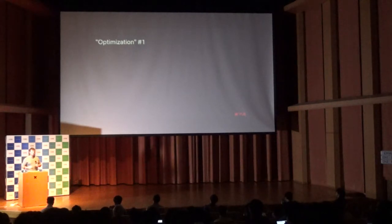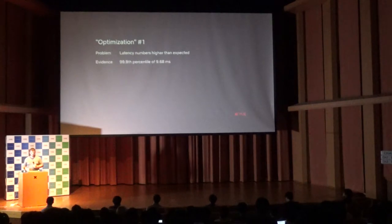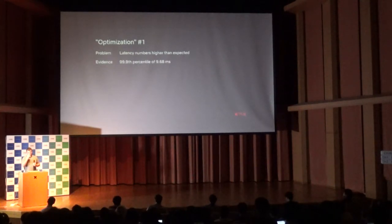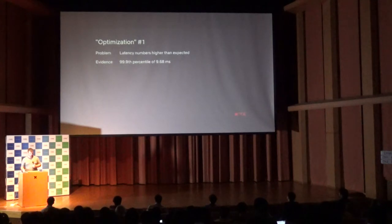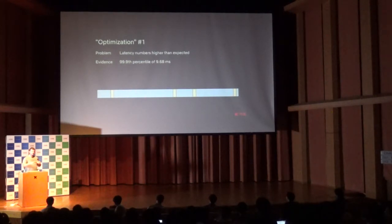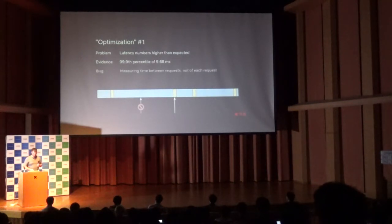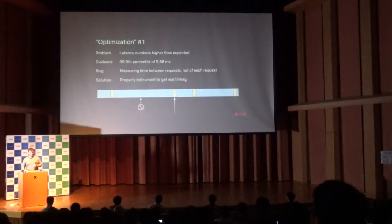Since this is our code, I can talk about optimizations we had to do to make it work in production. We had a problem — our latency numbers were higher than we thought they should be. As a cache service, we're very latency sensitive. Our 99.9th percentile was just under 10 milliseconds, which seemed really high because the client nodes were not seeing this in their metrics. It turned out we were measuring the time between requests rather than the actual request itself. The fix was just to write our code properly and instrument everything correctly.